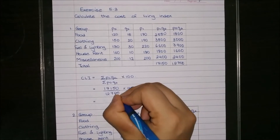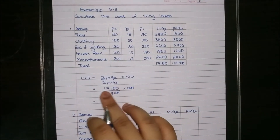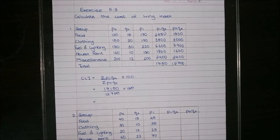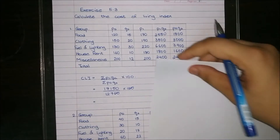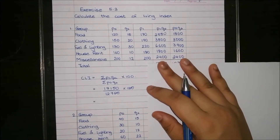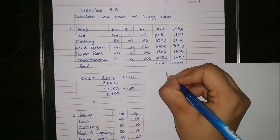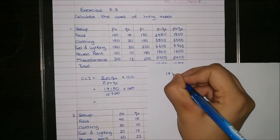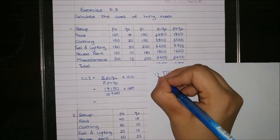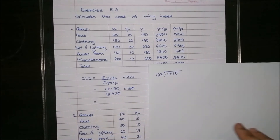We can cancel the zeros, so now we have to divide 1715 by 127. We will add the 0 back later. I take another page because otherwise it becomes very messy.